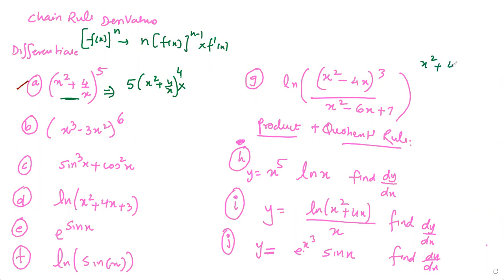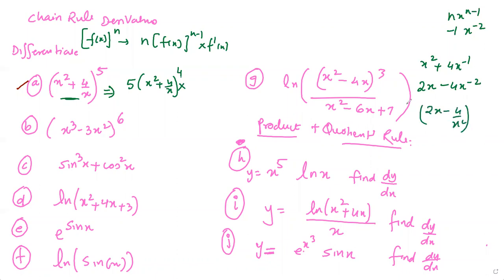When you're doing the derivative of x² + 4/x, you first rewrite it as x² + 4x to the power negative 1. The derivative of x² is 2x, and the derivative of 4x⁻¹ is negative 4x to the power negative 2. So the derivative is 2x minus 4/x². That goes in as f'(x): 5(x² + 4/x)⁴ times (2x minus 4/x²).